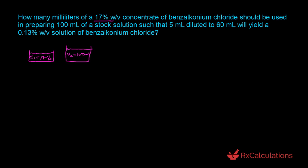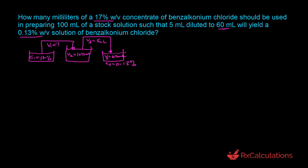For this question, we don't need to know the original volume of the concentrate. What we need to find is the volume taken from the concentrate to prepare the stock solution — that is what the question is asking. From this stock solution, we prepare a more diluted solution of 60 milliliters, with a concentration of 0.13% weight-by-volume. The volume taken from the stock solution is 5 milliliters — we can call this V3.